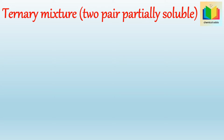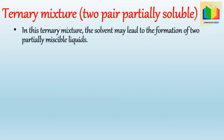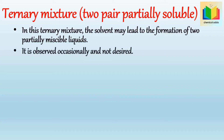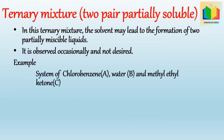In this ternary mixture, the solvent may lead to the formation of two partially miscible liquids. This ternary system is observed occasionally and it is not desired. An example of this ternary system is the system of chlorobenzene, water, and methyl ethyl ketone.